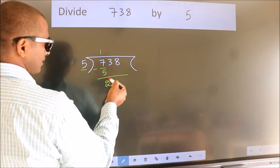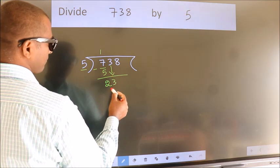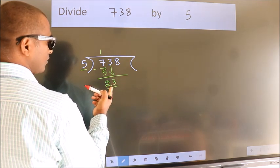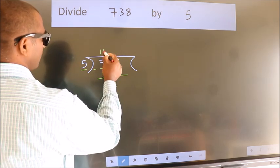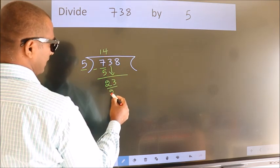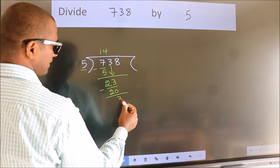After this, bring down the beside number. So 3 down. So 23. A number close to 23 in the 5 table is 5 fours 20. Now we subtract. We get 3.